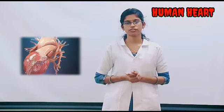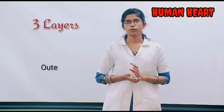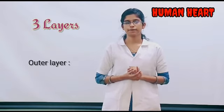Hello friends, today I am describing the human heart. The human heart is a muscular organ, conical in shape. It is situated in the middle mediastinum of the thoracic cage. It is covered by three layers — the outer layer is pericardium.